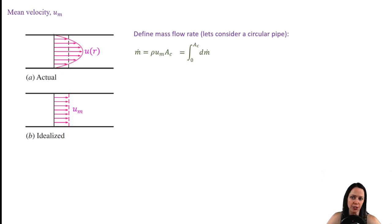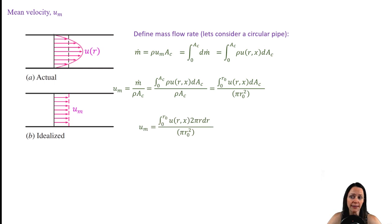We'll define this more generally for a differential area. We note that the velocity is a function of radial position and location x from the pipe entrance, although if it's fully developed, the flow is independent of x and dependent on radial direction only. Now we relate the definition for the mass flow rate back to the mean velocity. The density is constant, so it comes out of the integral and divides out. Then we define that differential cross-sectional area.